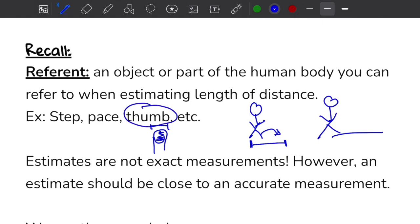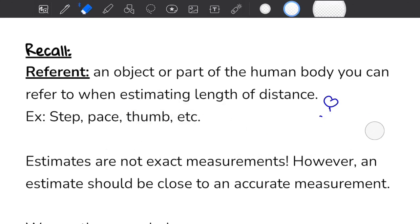You would use a thumb to estimate a very short length, like maybe how long your phone is or how wide your calculator is. A step and a pace are usually used for bigger distances, like if you wanted to measure the length of your driveway or the width of your room, or how long a hallway is.